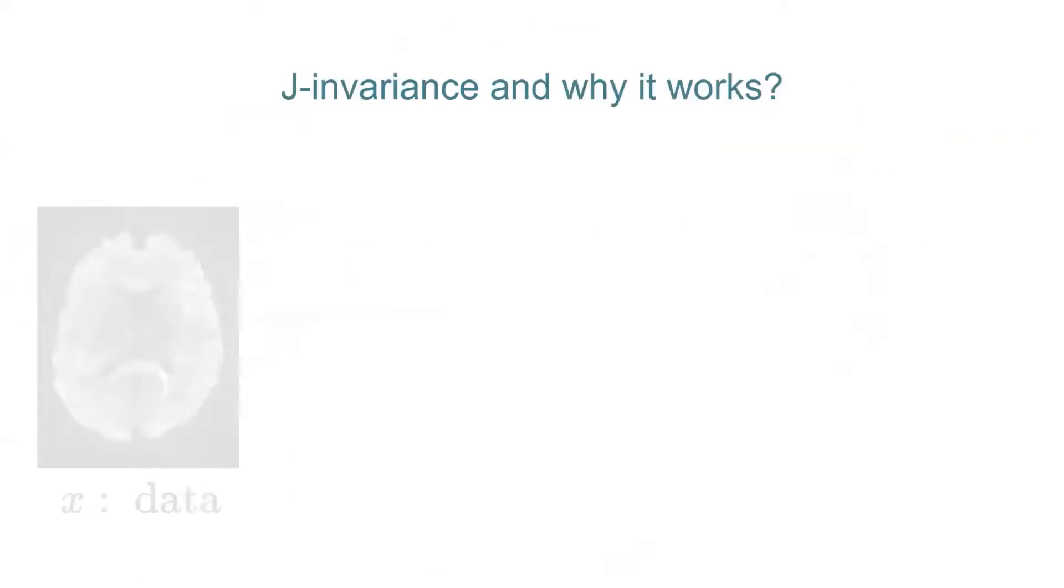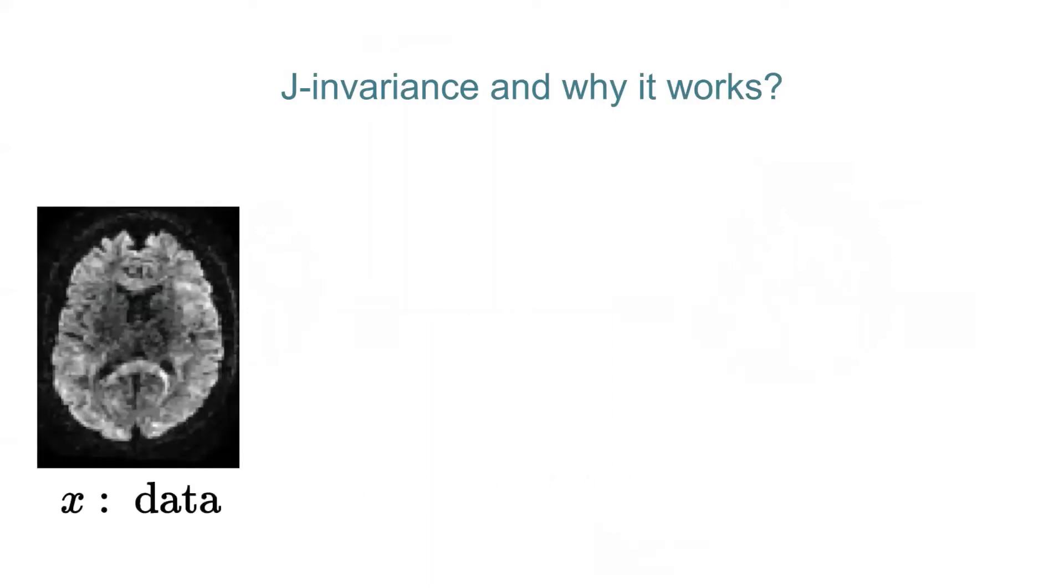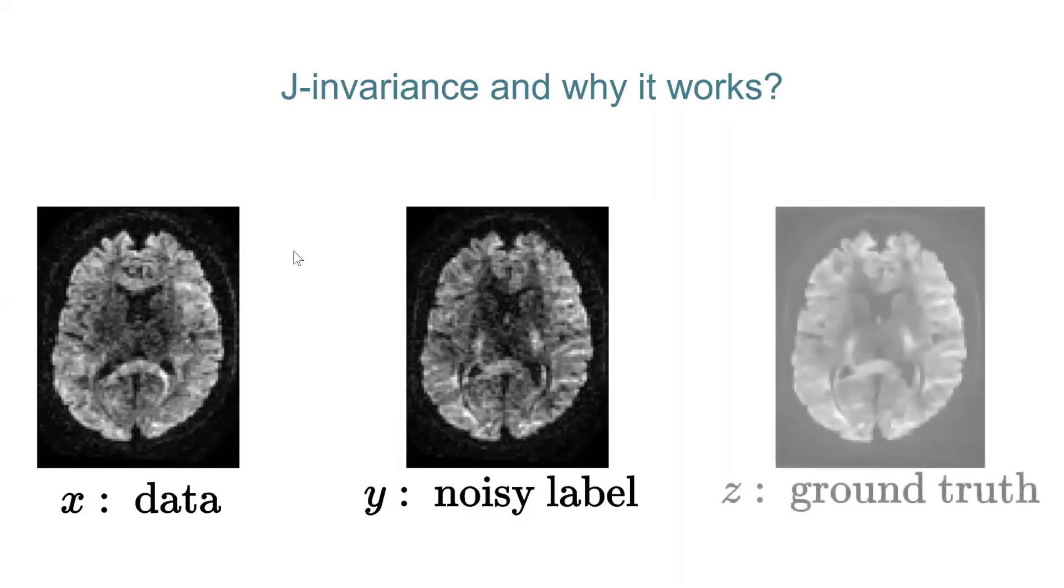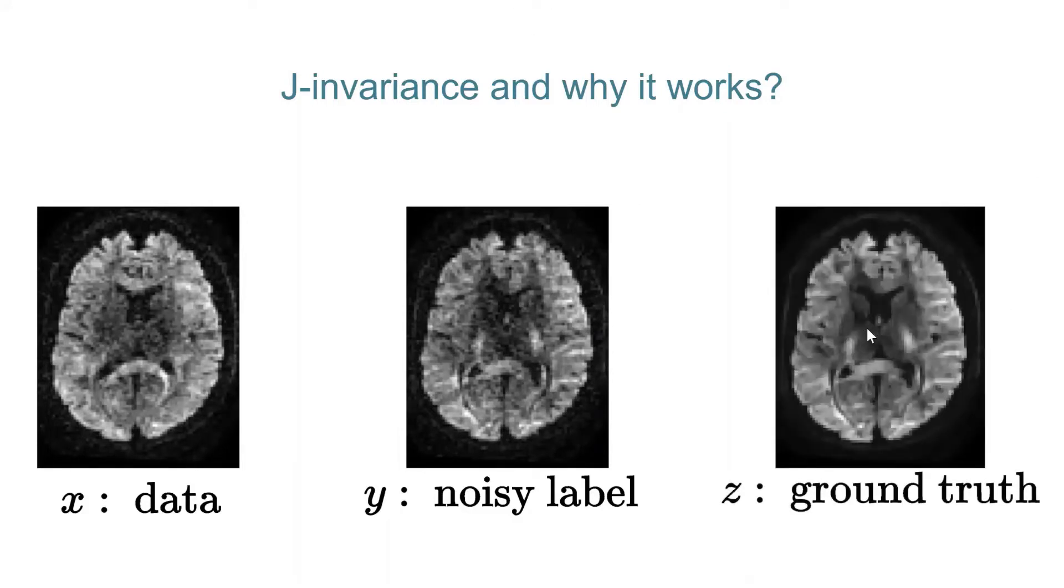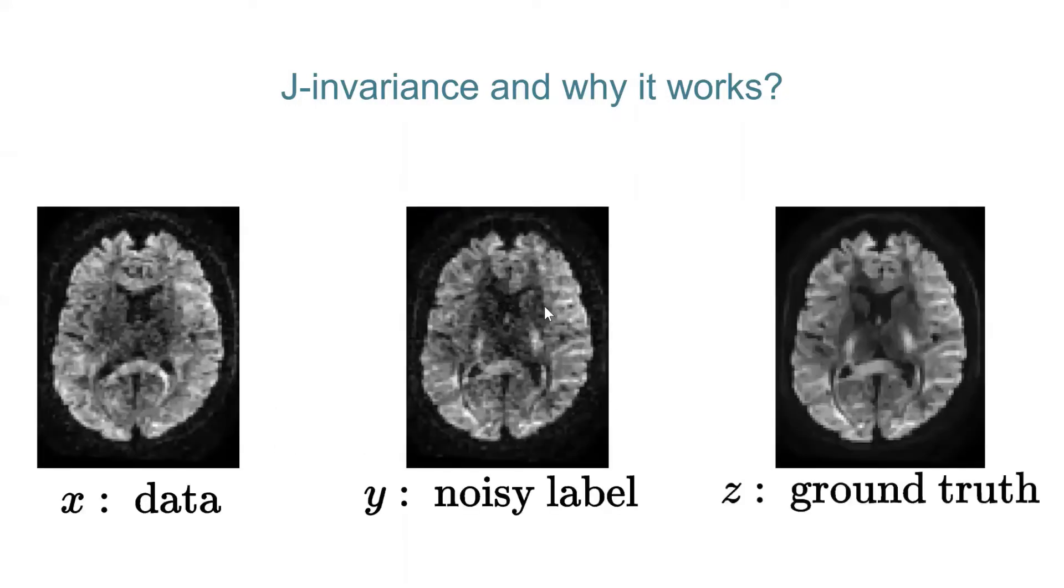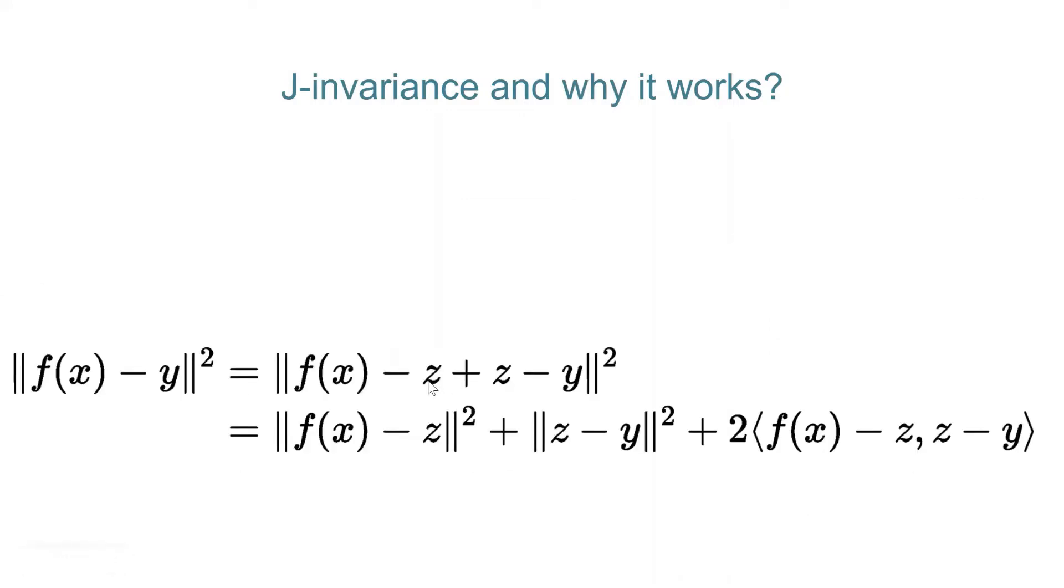So how does this J-invariance work? So let's say you had your data, let's call it X, and let's say Y is your noisy label. So let's say you had six gradient directions, you pulled out one of those six gradient directions. Let's say this was one and this was five remaining gradient directions. And let's say you had the ground truth data, let's call it Z. Then if you just minimize f(x) minus y, which is essentially, this is the regression model that you want to train, Y was your noisy label, X was just the five images that we used for training. If you just do the standard math of adding and subtracting so that you don't change this equation and expand it out, you realize that this is nothing but expansion of f(x) minus z the whole square, z minus y the whole square, and this.